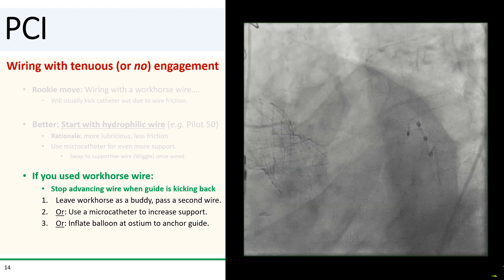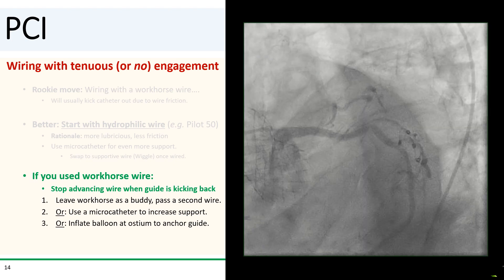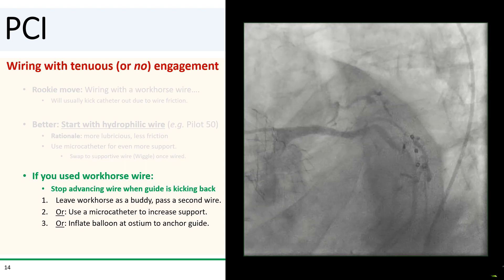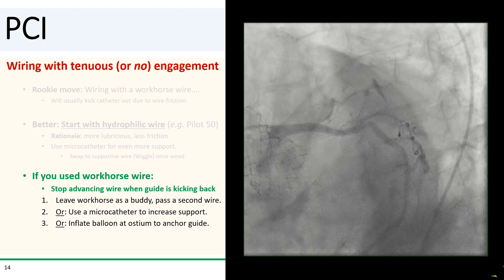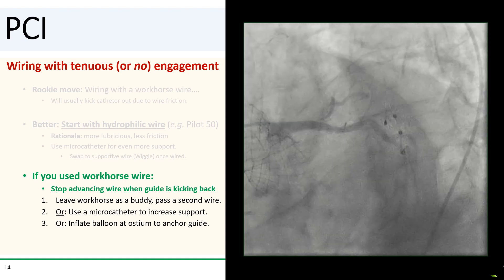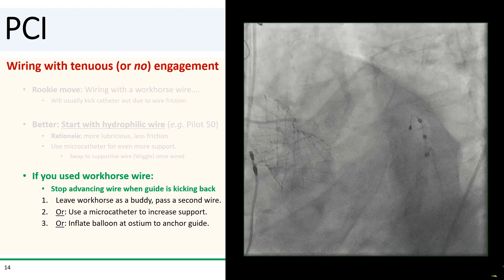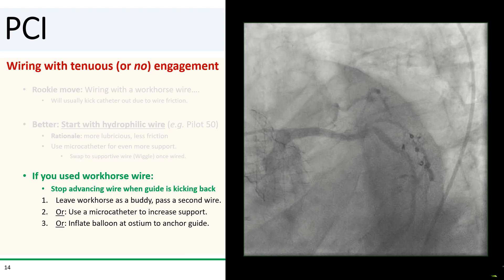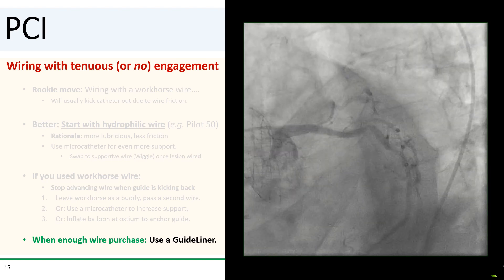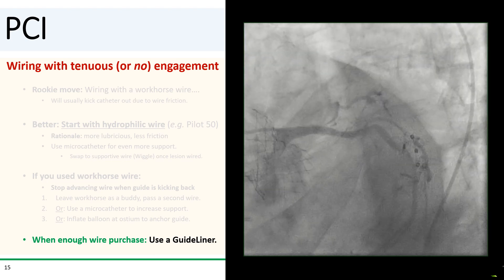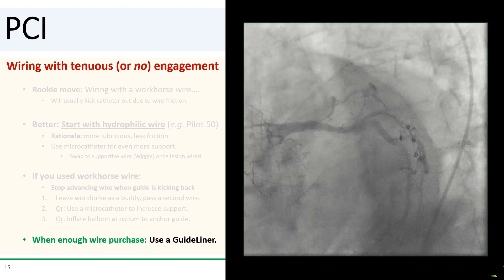If you have a short wire, you can either attach a docking wire or use the trapping technique to get that micro catheter in there. The third option is to gently inflate a balloon at the ostium or in the proximal part of the vessel. This acts as an anchor balloon to stabilize engagement, allowing you to pull your guide further in as well as push your wire more distally. And finally, once you have enough wire purchased, get a guide liner in there—and you can do this before you've even crossed the lesion.